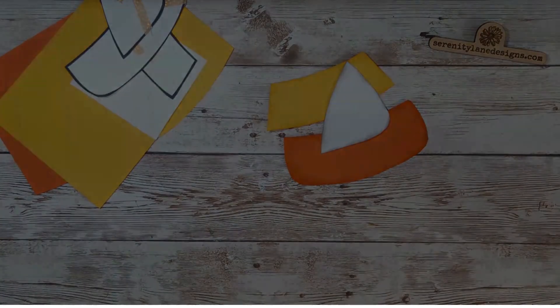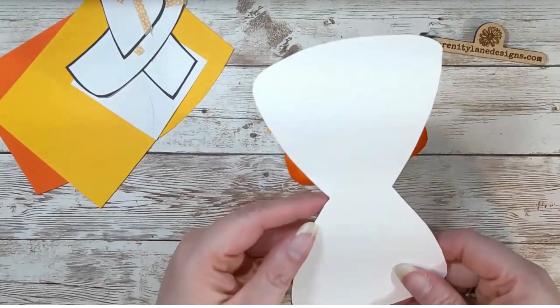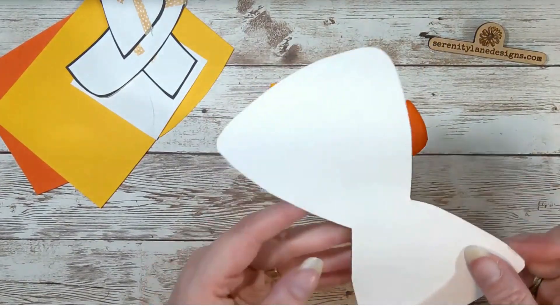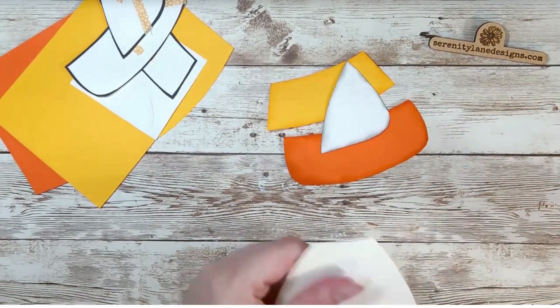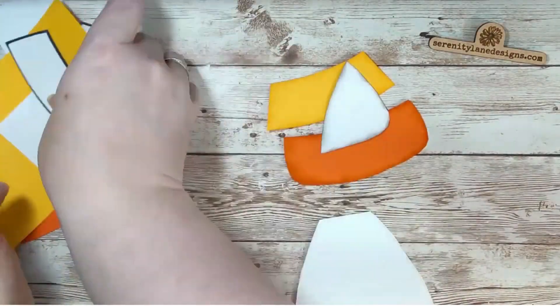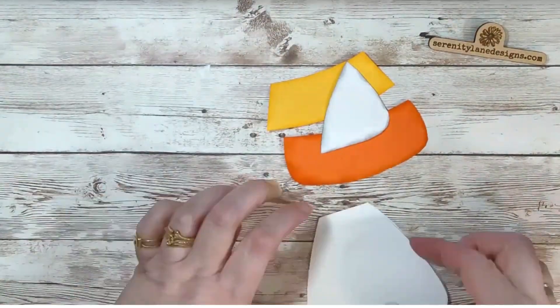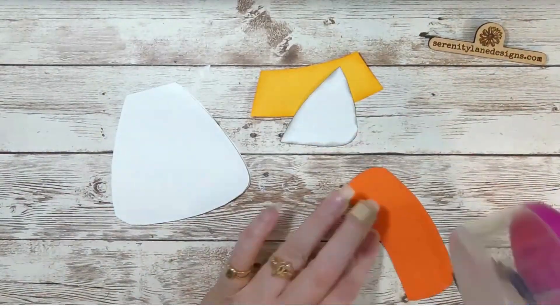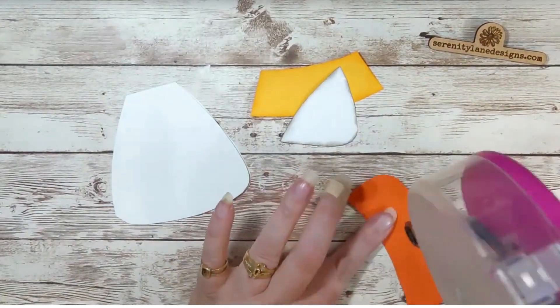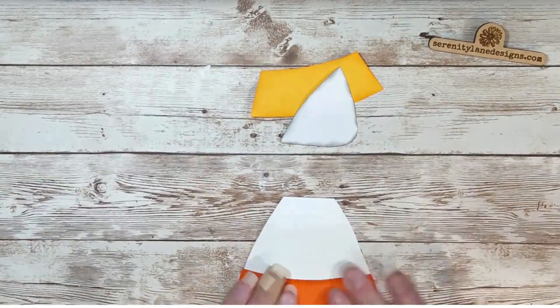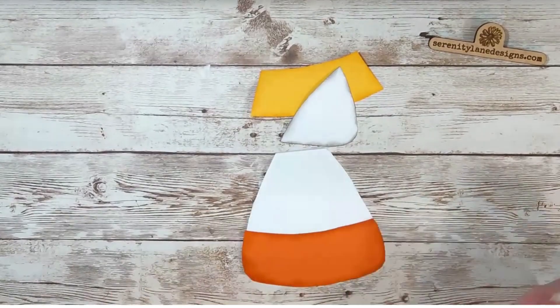Once your inking is all done, we're going to take the card base and fold it in half. There's a nice crease. You'll also notice that the card base is a little shorter than the pieces that you have. The top part of the white will peek up over top of it.